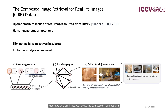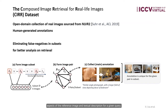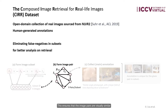Motivated by these issues, we release the Composed Image Retrieval for real-life image dataset. It is based on the open-domain collection of real image pairs from natural language visual reasoning for real, for which we collect high-quality annotations that aim to tease out the important aspects of reference image and texture description for a given query. Specifically, we firstly form image subsets of six by similarity ranking, from which we sample image pairs to be labeled. This ensures that the image pairs are visually similar to an extent.